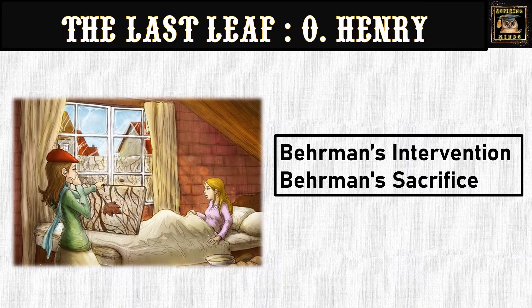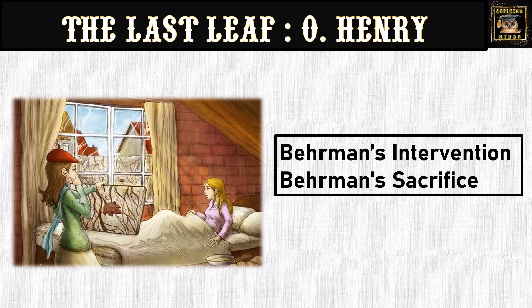Sue seeks the help of Behrman, who is an old painter living in the same building. Behrman initially does not like Johnsy's mindset but then agrees to help. He is determined to create a masterpiece and paints a leaf on the ivy creeper during one stormy night. Tragically, because he was painting outside, Behrman himself succumbs to pneumonia after this selfless act of painting a leaf to save Johnsy's life.